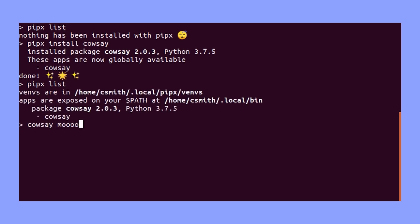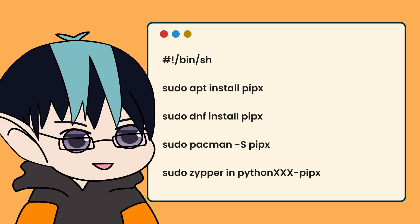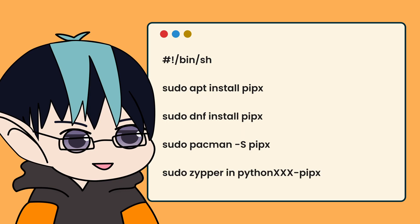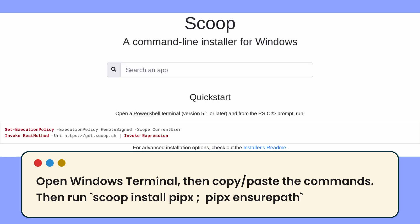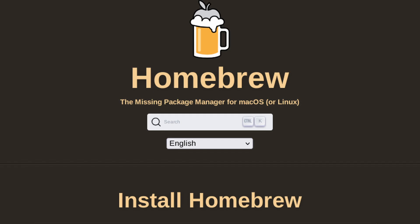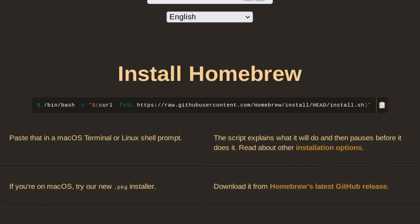Depending on the operating system you use, this can range from easy to a little difficult. If you're on Linux, you can just use your package manager to install PipX. I actually use a Distrobox or Docker container to run PipX to keep my system clean, so I can delete the container when done. If you're on Windows, you can use a package manager called Scoop, and then use Scoop to install PipX. On macOS, you'll use a program called Homebrew — after installing Homebrew by copy-pasting the line from their website, you install PipX with "brew install pipx".